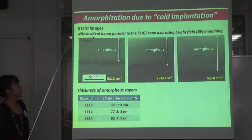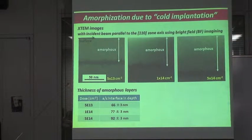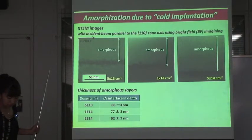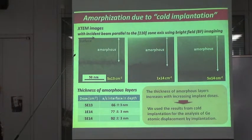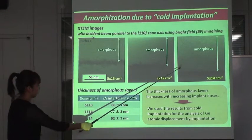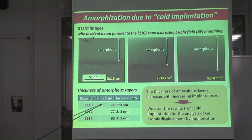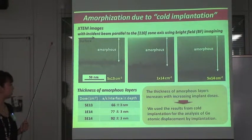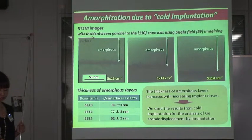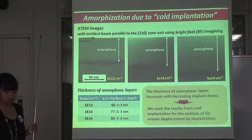Here are the TEM images of the same cold implantation samples. Amorphous layers were observed in all of the samples, and the thickness of the amorphous layer increases with increasing implant doses. So we use the results from cold implantation for the analysis of Germanium atomic displacement.